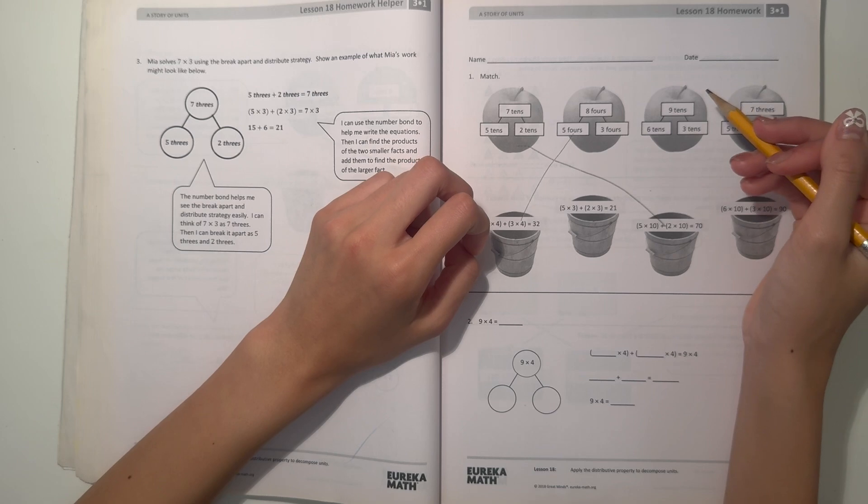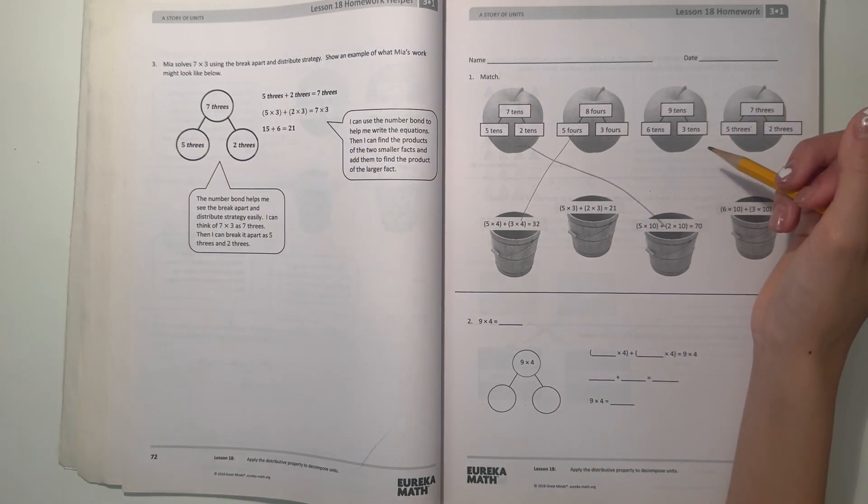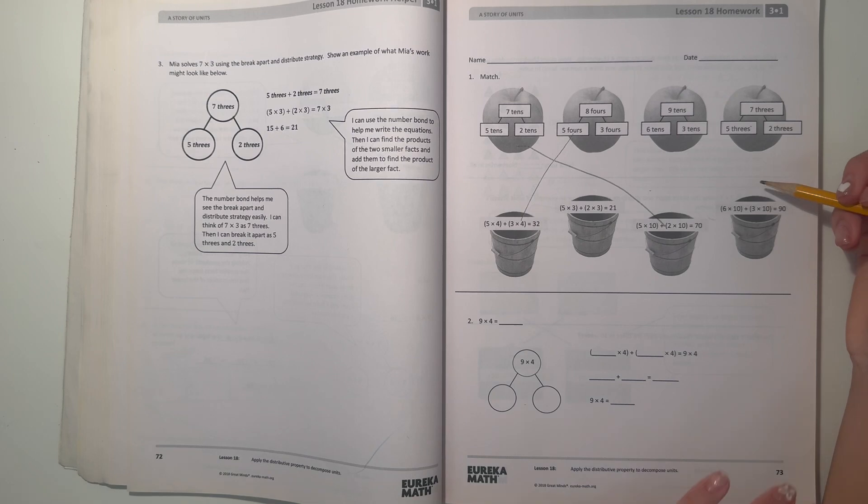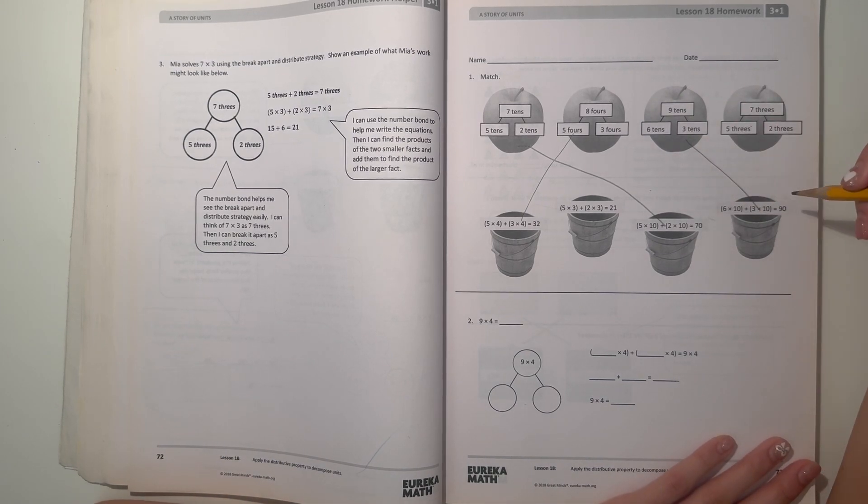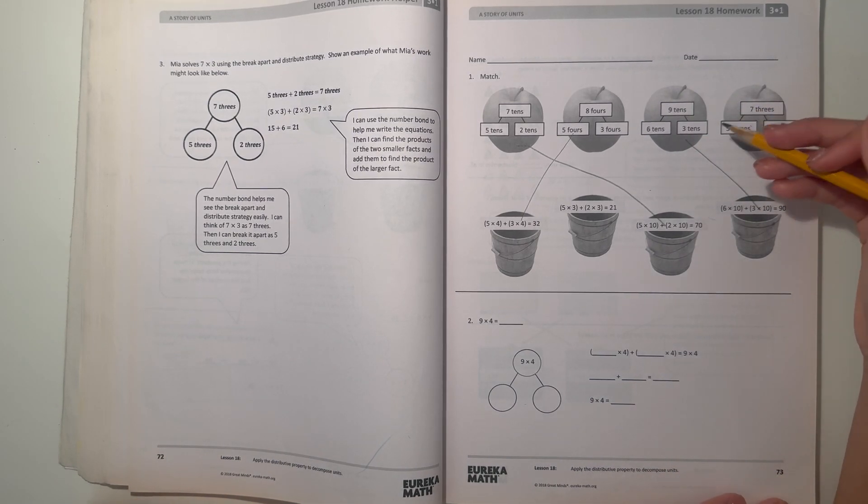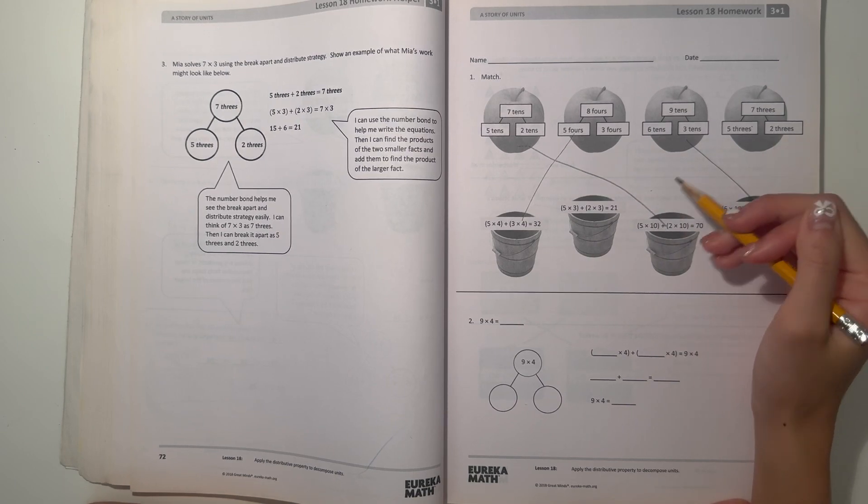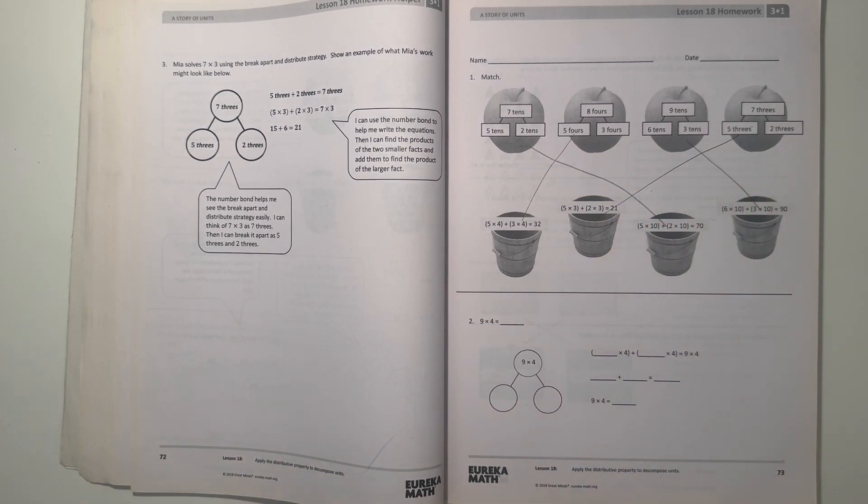And now nine tens: six tens plus three tens equals 90, which is also nine tens. And this one, we have five threes plus two threes equals seven threes, which is 21.